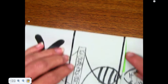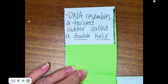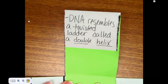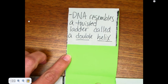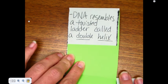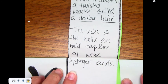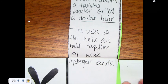Okay, now we have our section that we zoomed in on of that chromosome pair. DNA resembles a twisted ladder called a double helix. The sides of the helix are held together by weak hydrogen bonds.